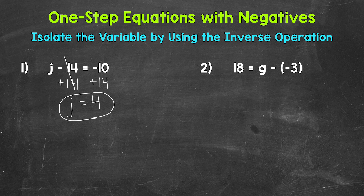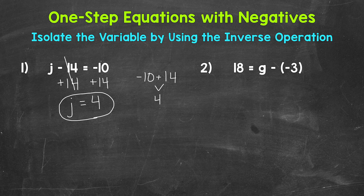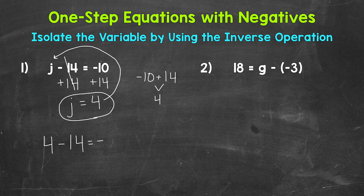One thing I want to mention: we always have the option to work to the side in order to show work or set up a problem differently. For example, negative 10 plus 14 — we solved vertically, so up and down. If you prefer to work through that horizontally, you can always rewrite the problem off to the side: negative 10 plus 14 equals 4. So J equals 4 — that's our solution. We can always check a solution by plugging it into the original equation. So let's plug 4 in for J: 4 minus 14 equals negative 10. 4 minus 14 does equal negative 10, so we have the correct solution. J equals 4.